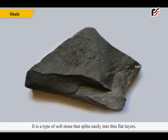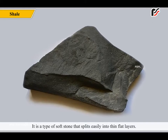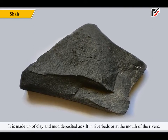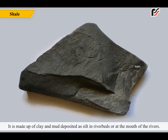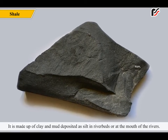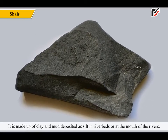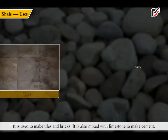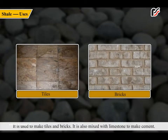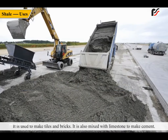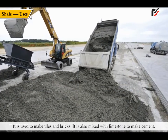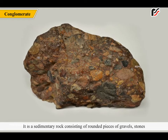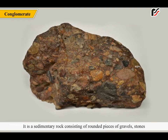Shale is a type of soft stone that splits easily into thin flat layers. It is made up of clay and mud deposited as silt in river beds or at the mouth of rivers. Shale is gray in color. It is used to make tiles and bricks. It is also mixed with limestone to make cement.